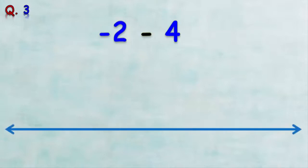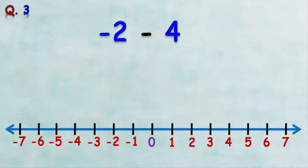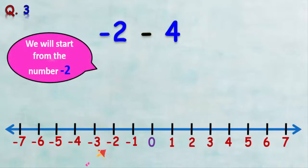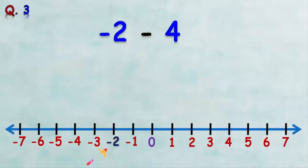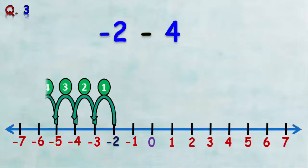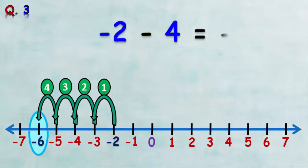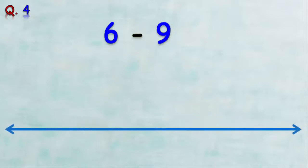Third example: find negative two minus four. We want to subtract negative two minus four. As usual, we draw a number line, start at negative two, and make four backward jumps: one, two, three, four. We get negative six, so negative two minus four is negative six.